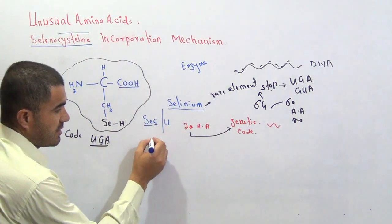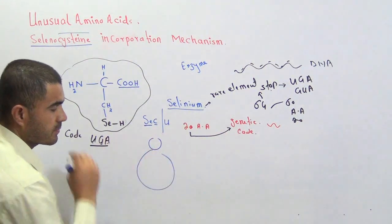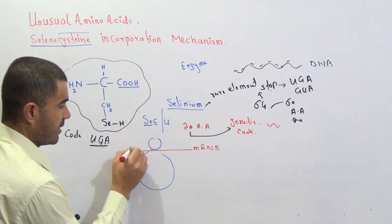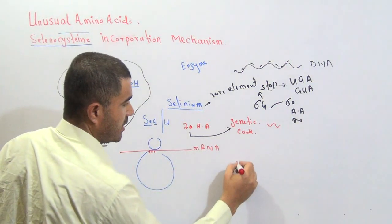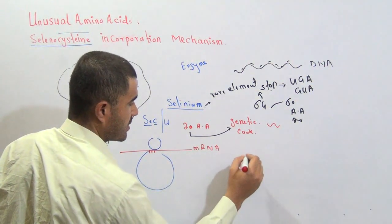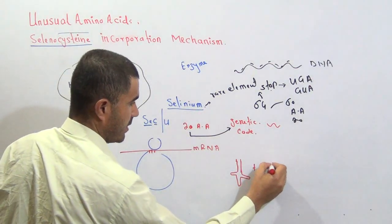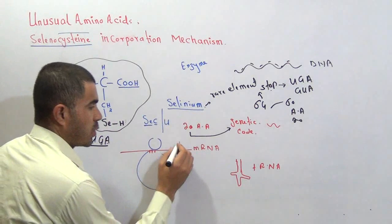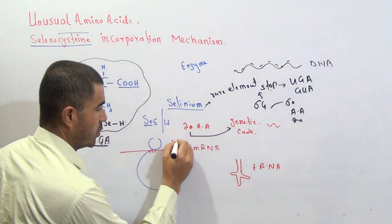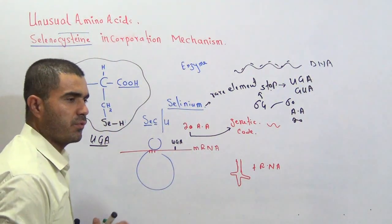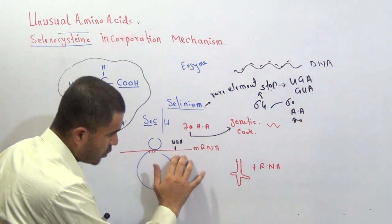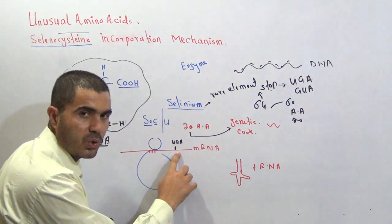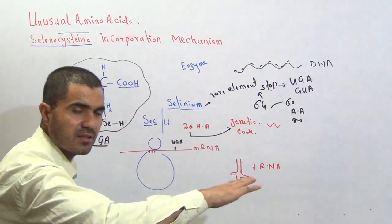Whenever a protein is synthesized, we need a ribosome. On that ribosome we need messenger RNA — there will be different codes on it. And we need another RNA called transfer RNA, or tRNA. Let's suppose there is a code UGA on the messenger RNA. We know very well in protein synthesis that different codes on the messenger RNA are for different amino acids, and whenever protein synthesis stops, a stop code such as UGA or UAG appears and protein synthesis becomes complete.